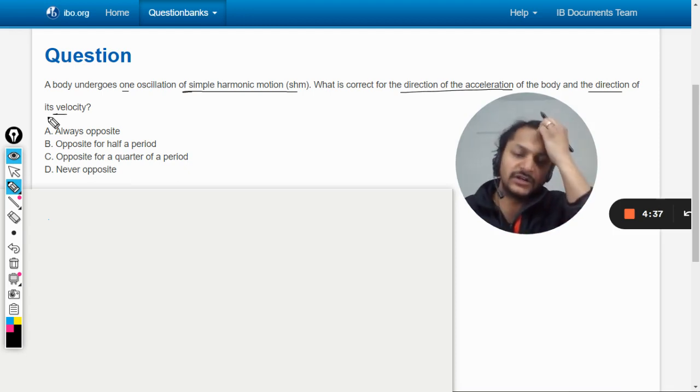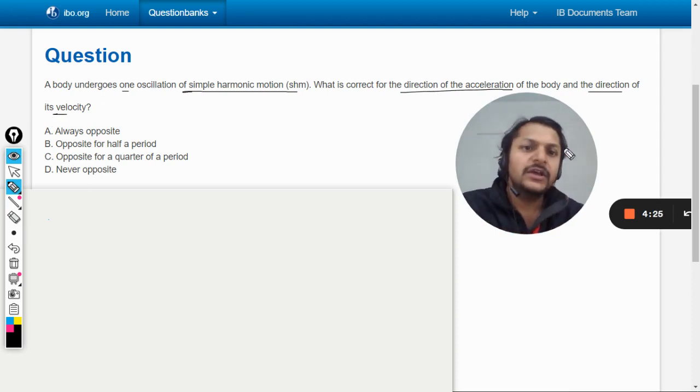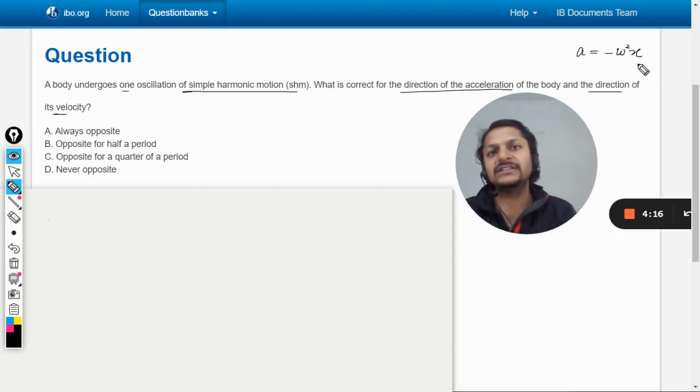A little earlier, some days ago, I uploaded one question from the IB and they were talking about the direction of acceleration and displacement. The answer for that was they're always opposite to each other, obviously, because the fundamental definition for SHM is that acceleration should be equal to negative Omega squared X. It means that the acceleration is always having the opposite direction than that of displacement.